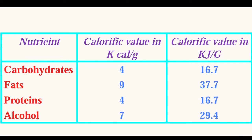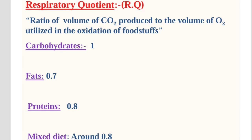Fat has a higher calorific value because it is more reduced than carbohydrates and proteins. Another term is the respiratory quotient (RQ), which is the ratio of carbon dioxide produced to the volume of oxygen utilized during oxidation of foods. The RQ of carbohydrates is 1, fats is 0.7, proteins is 0.8, and a mixed diet is around 0.8. The RQ of fats and proteins is lower because they contain less oxygen compared to carbohydrates.